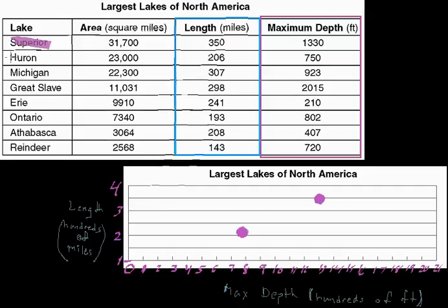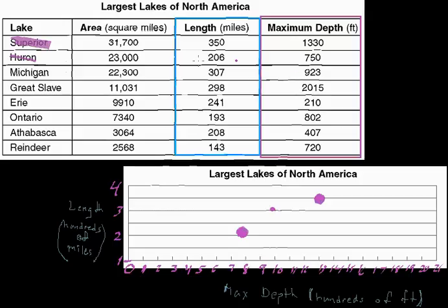Now let's go to the third value, Lake Michigan. Lake Michigan's depth is 923 feet, so about 9.2 on the horizontal axis, and we're looking at a length of 307 miles — just a little bit over the 3 mark on the vertical axis. Right about there is Lake Michigan.